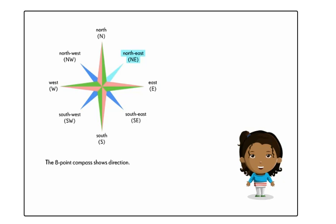Northeast — notice that Northeast is pointing at the position exactly between North and East. Similarly, Southeast refers to the position exactly between South and East.